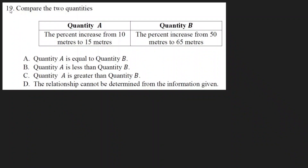Compare the two quantities. Quantity A is the percent increase from 10 meters to 15 meters. Quantity B is the percent increase from 50 meters to 65 meters.